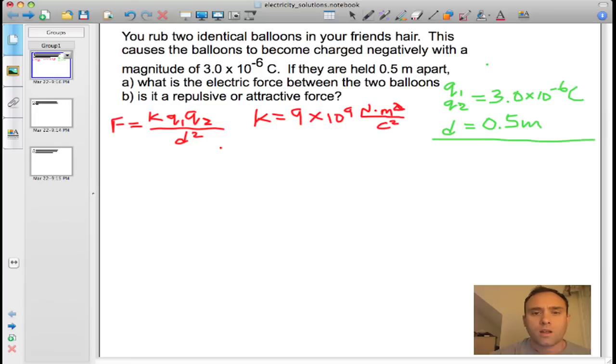Now it's just time to substitute in and make the solution. And that looks like this. F, which is the force, is equal to 9 times 10 to the ninth newtons meters squared per coulomb squared, times 3.0 times 10 to the negative 6 coulombs, times 3.0 times 10 to the negative 6 coulombs, because they're both the same.